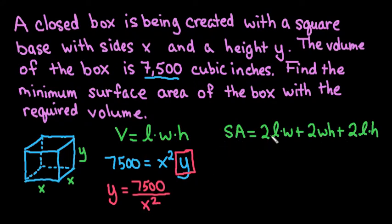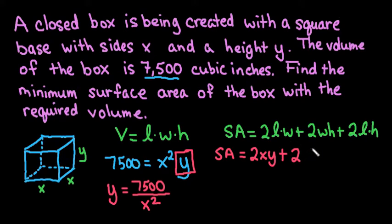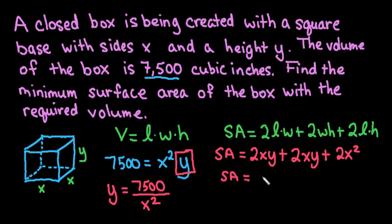Now we're going to write our surface area as a function of x. We look at what this would look like with our x and y: 2xy plus 2xy plus x squared. If we simplify this we really have 2x squared plus 4xy, so that the like terms are already added together.